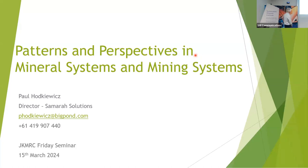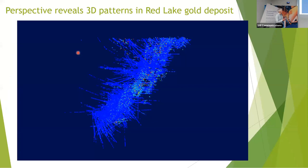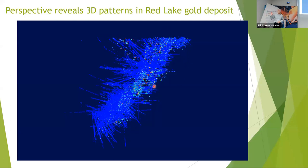So what do I mean by patterns and perspectives? I thought I should start with an example — probably the easiest way to do this. Here it is. This is the Red Lake orogenic gold deposit in Canada. It's an Archean orogenic gold system. This is a view of several thousand drill holes — a side view on the top. It's an Archean craton, so that's the surface. This is thousands of drill holes and ore control data over 50 years of mining.